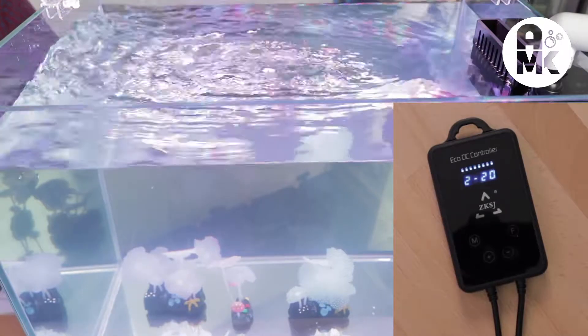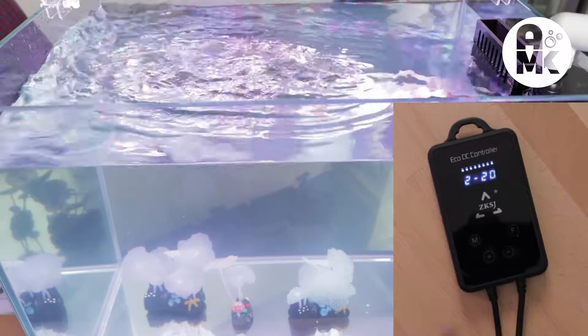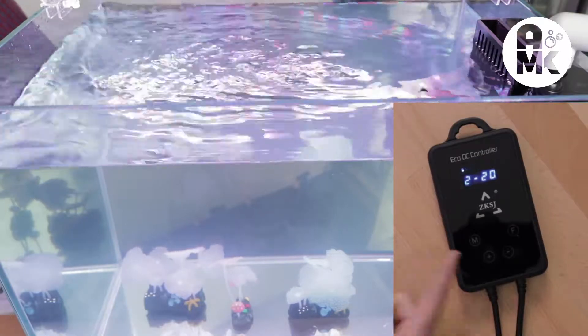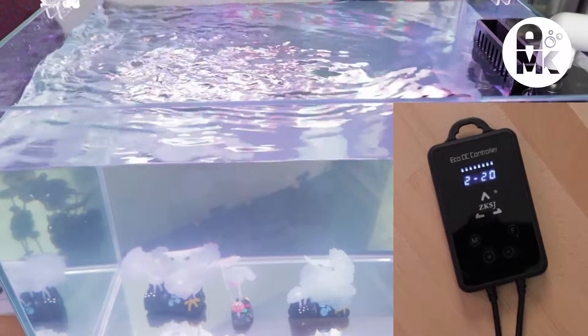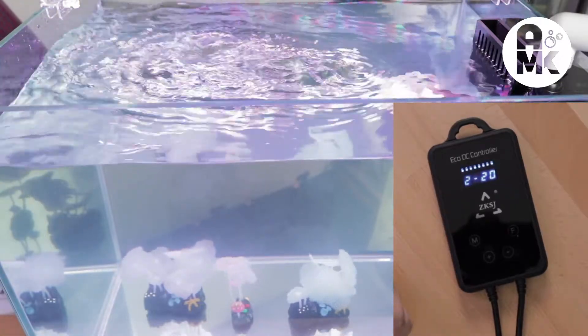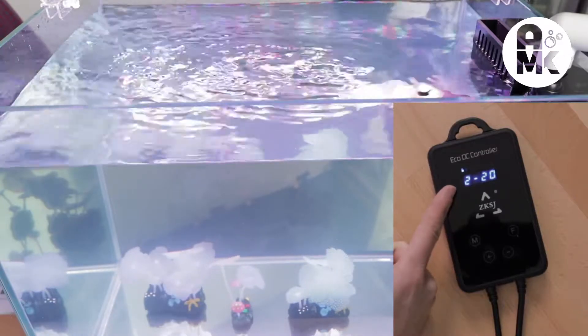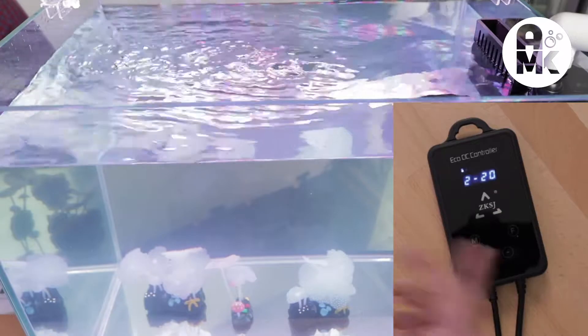So once you get to mode two, you have 20 different settings you can set it to. Remember, it's going to pulse between what the first setting was in mode one to this. So right here, this is the most extreme. On 20, you can see the dial and you can see the flow. We're going to go all the way down and all the way back up for a full pulse. And then you can change those buttons to get anything in between.